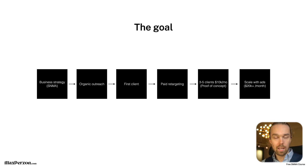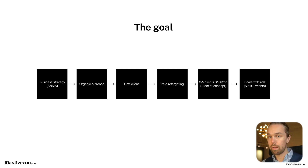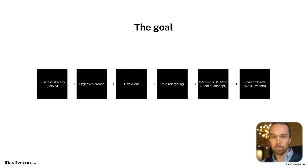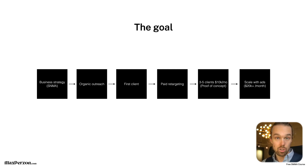As soon as you find that proof of concept — three to five clients, positive cash flow coming in — that's when I recommend you start to scale. You reach 10K per month completely organically. Then you can start a referral program, do more paid ads, and take it to 20, 30, 40, 50K or however far you want to take your agency. Now let's get the theory out of the way and dig into the clear instructions on how to actually build a retargeting campaign.